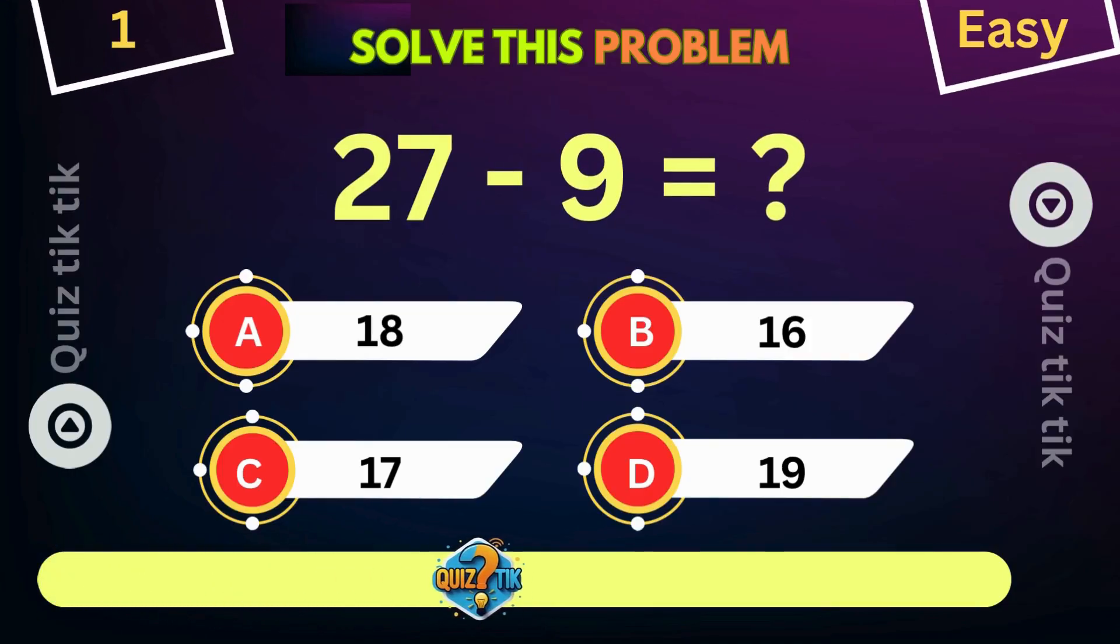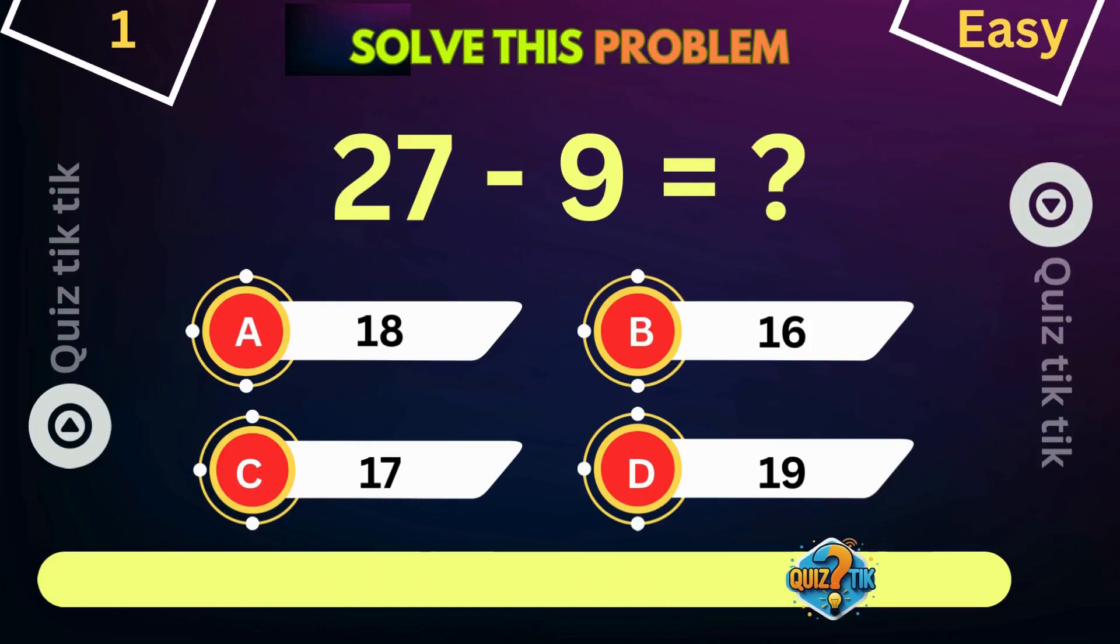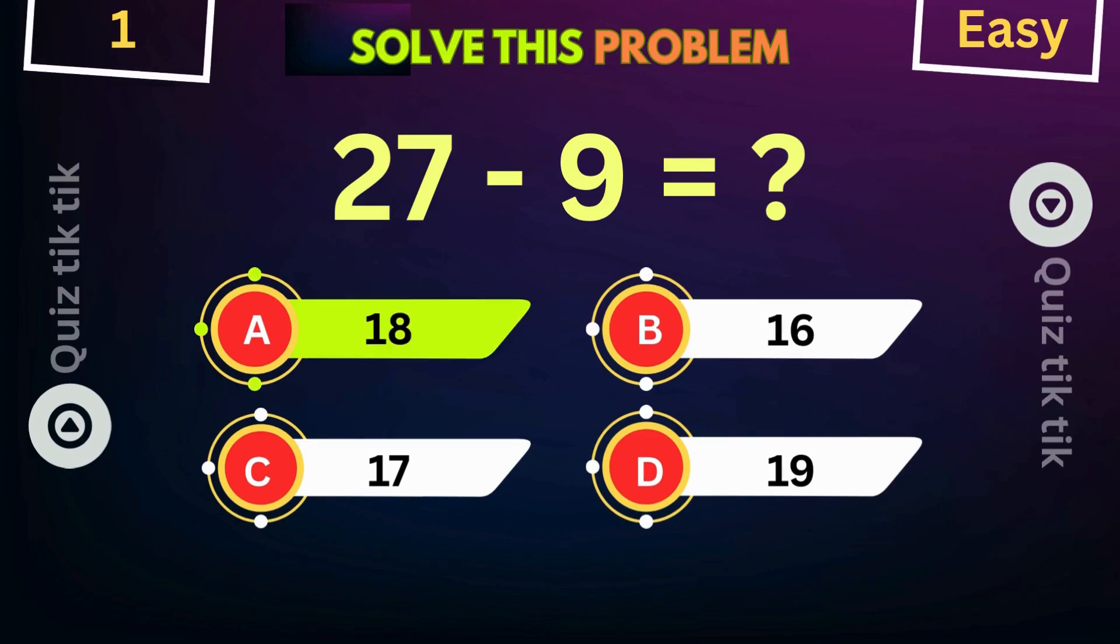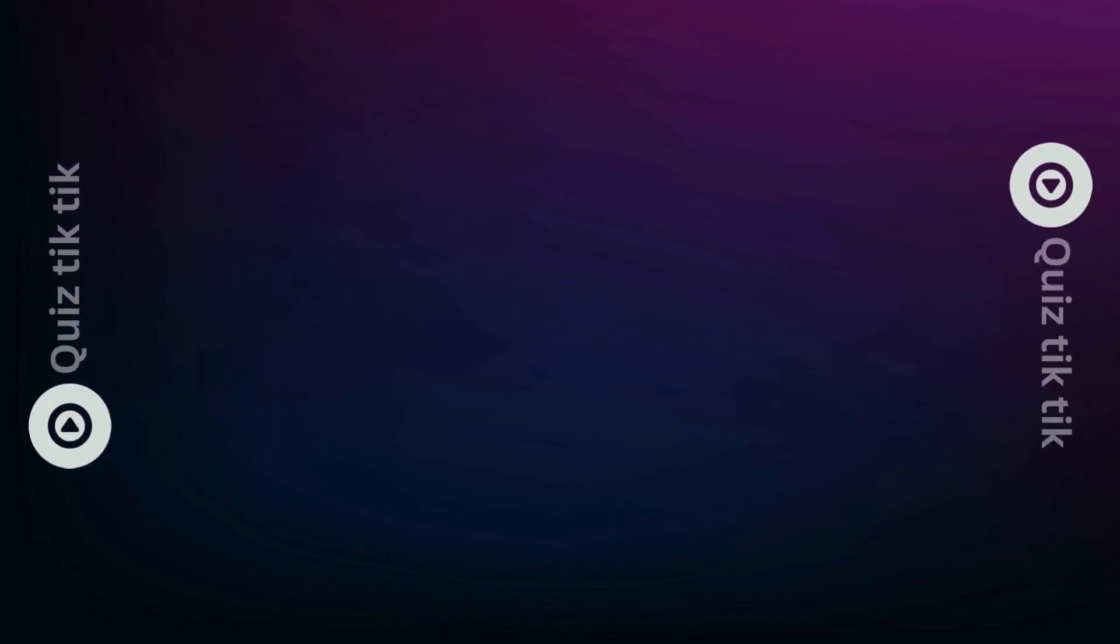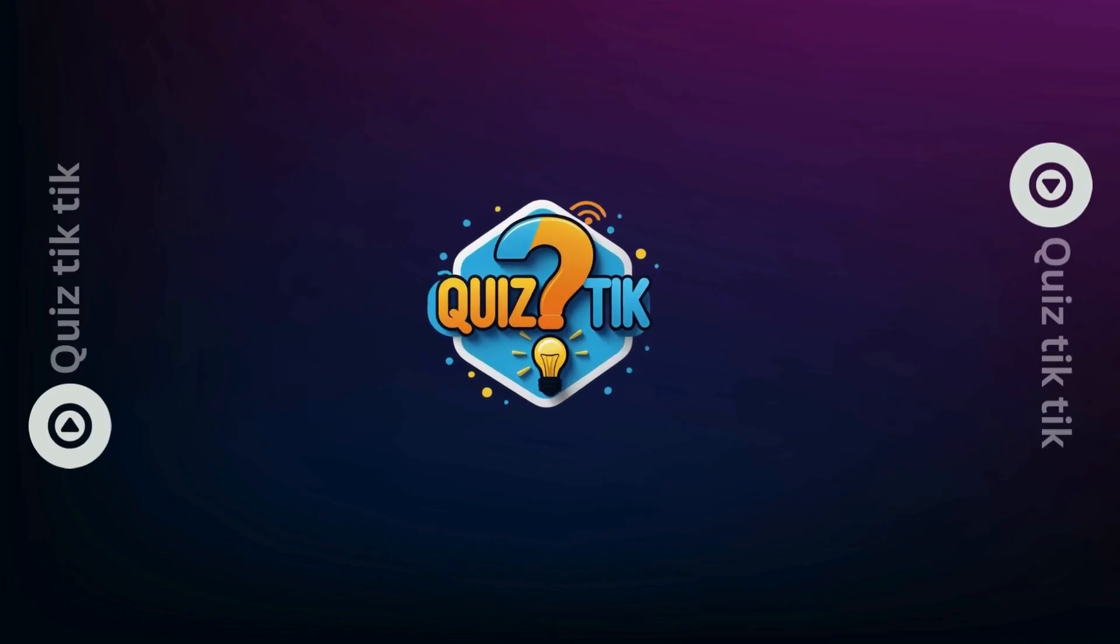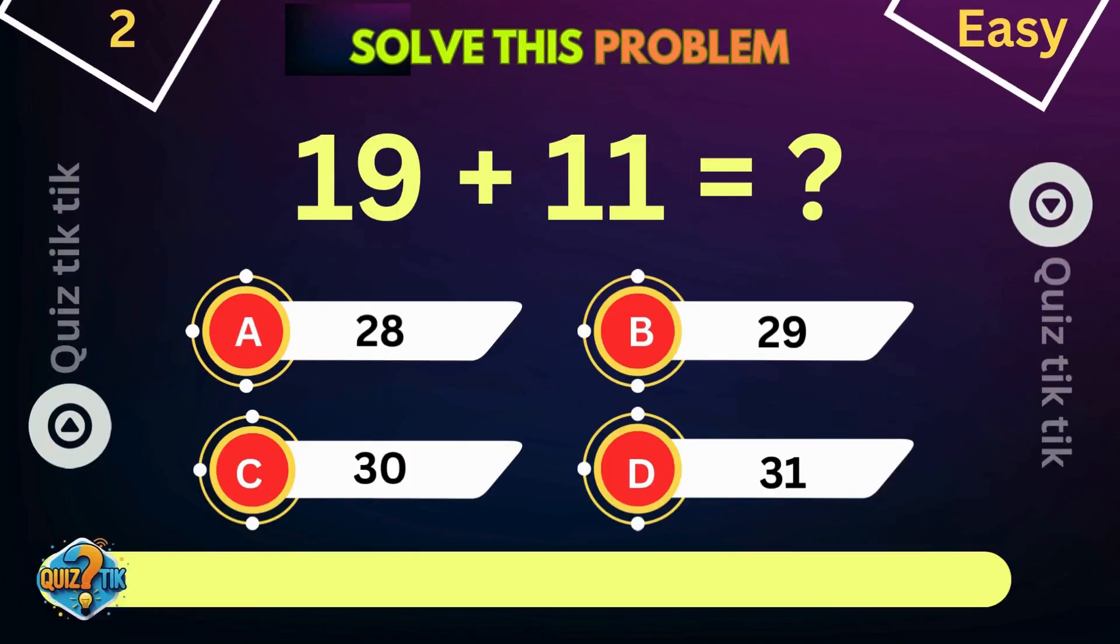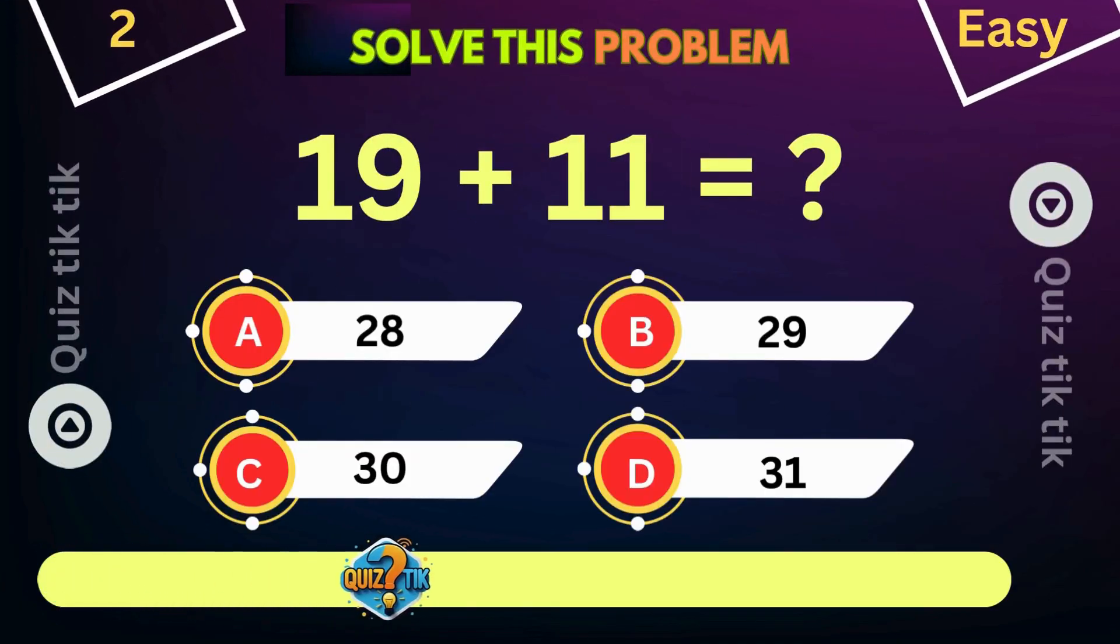27 minus 9 is equal to. 19 plus 11 is equal to.